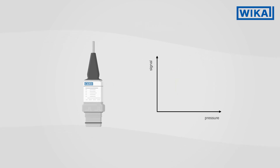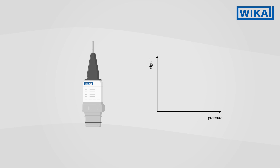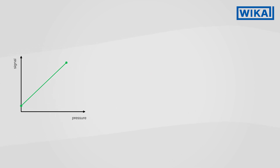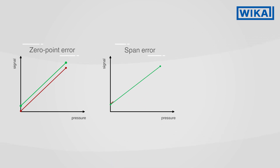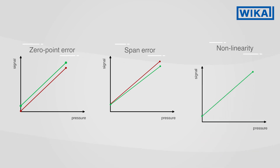How do the three errors just described affect the measuring process and the pressure sensor? The sensor characteristic curve describes at how much pressure which output signal is issued. The zero point error shifts the sensor characteristic curve in parallel, the span error affects the slope of the straight line, and non-linearity turns the line into a curve.